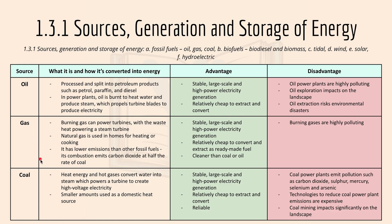Gas: burning gas can power turbines, with waste heat powering a steam turbine. Natural gas is used in homes for heating or cooking. It has low emissions and is stable, large scale, and high power electricity generation. It's relatively cleaner than coal or oil, but burning gases are still highly polluting.